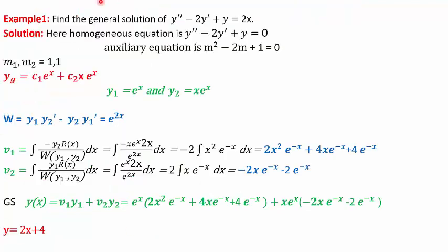We find the general solution using the formula y = v1·y1 + v2·y2. In the first example, we are asked to solve y'' − 2y' + y = 2x. We reduce the right-hand side to 0, giving the homogeneous equation y'' − 2y' + y = 0. The auxiliary equation is m² − 2m + 1 = 0, giving repeated roots m = 1, 1. The general solution is c1·e^x + c2·x·e^x, so y1 = e^x and y2 = x·e^x.